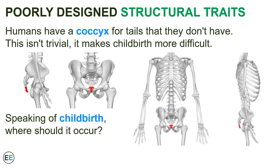An interesting example of a poorly designed trait is the coccyx that humans have at the base of their spine. This is a small set of bones that are for tails that humans no longer have, but our ancestors did have tails. The presence of these bones isn't trivial — the coccyx makes childbirth more difficult. In fact, one way you can tell a male skeleton from a female skeleton is that the coccyx is straighter in females to provide more room in the birth canal for babies. If you were to design a human from scratch, there's no reason to put that extra little set of bones in there.